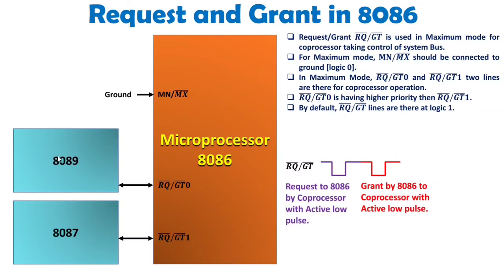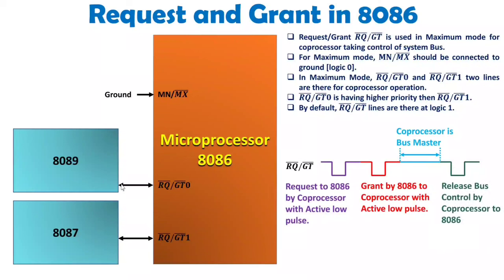Once the grant is given to the coprocessor, it becomes the bus master and can operate with the system bus — address bus, data bus, and control bus. Once the coprocessor completes its task, it again sends an active low signal, meaning it is releasing system bus control. After releasing the bus, 8086 once again becomes the bus master. That is how control of the system bus is transferred between the coprocessor and 8086 using these two lines in maximum mode.